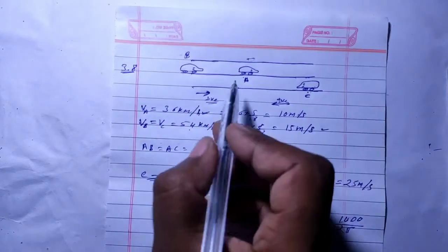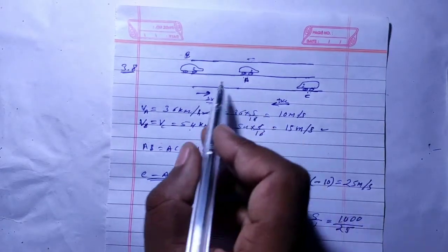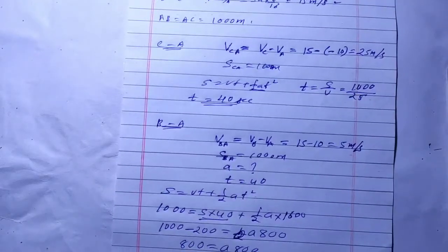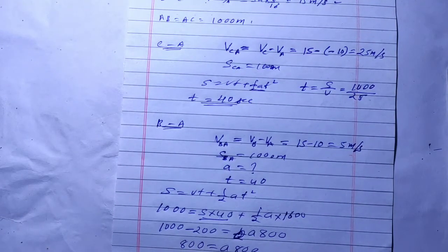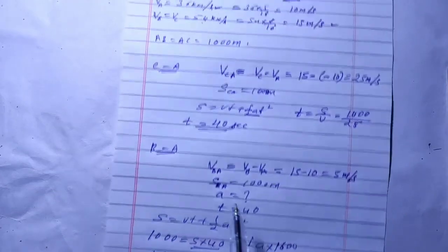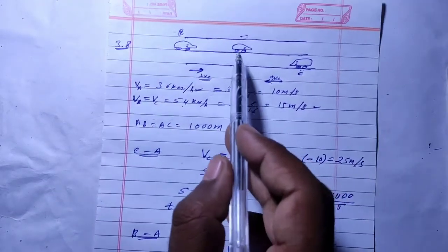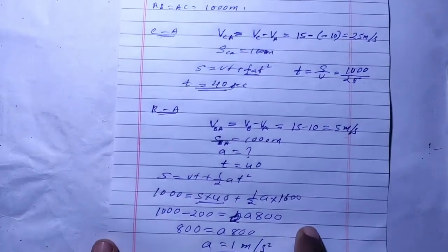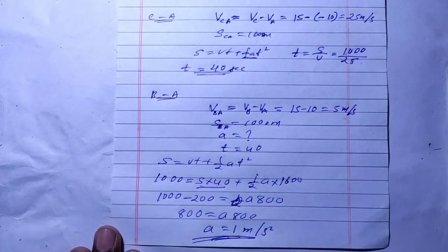The acceleration should be greater than 1 meter per second squared, so that B will take less than 40 seconds to cross A and overtake before C arrives. The acceleration must be greater than 1 meter per second squared to avoid an accident.